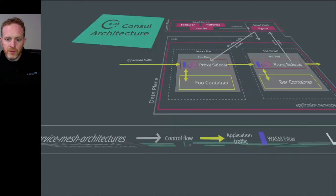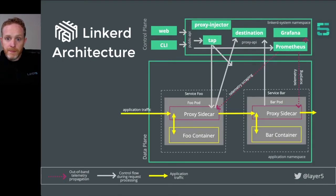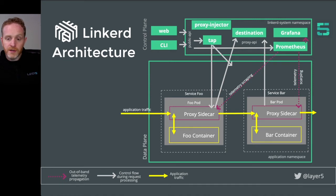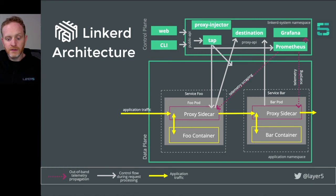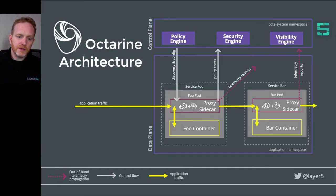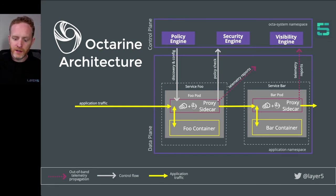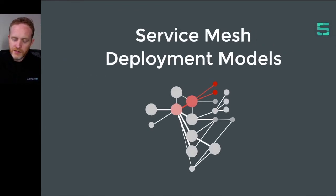Linkerd also has a control plane and a data plane with the same sidecar proxy model. This one doesn't use Envoy — the Linkerd proxy was written in Rust, purposefully for use as a service mesh data plane, and not designed to be general purpose. Octarine is a security-centric service mesh. The company was recently acquired by VMware, and some of these components are beginning to form part of what Tanzu Service Mesh is.